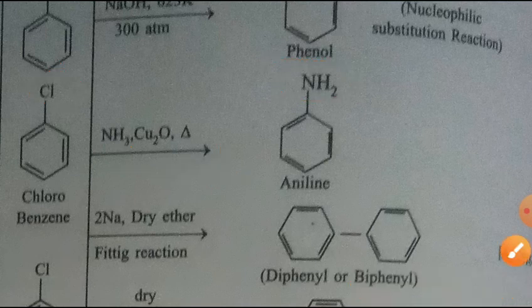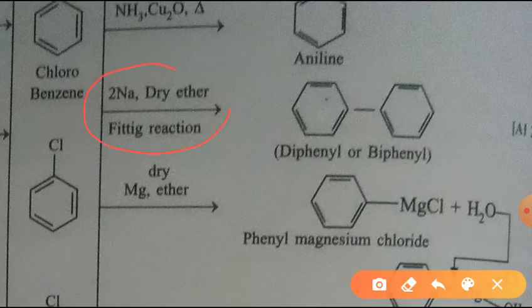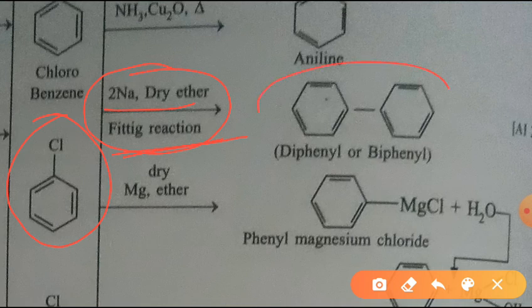Just as haloalkanes react with sodium and dry ether in the Wurtz reaction, if you take chlorobenzene and react with sodium and dry ether it is called the Fittig reaction, and you get diphenyl or biphenyl. So chlorobenzene can be converted to biphenyl by reacting with sodium and dry ether.